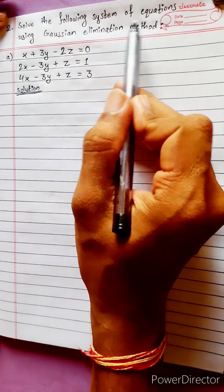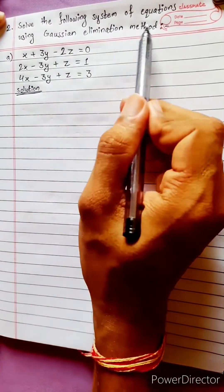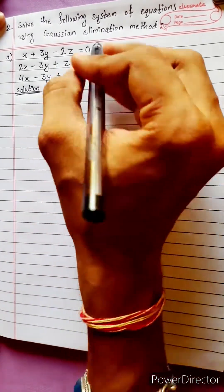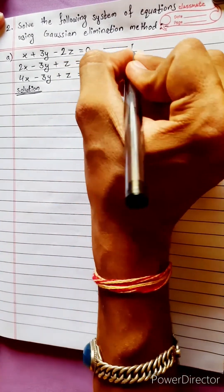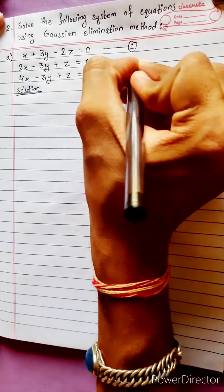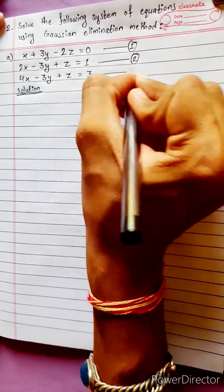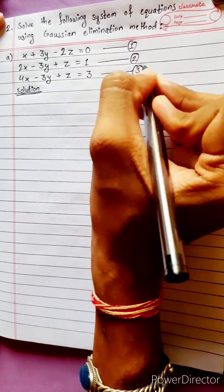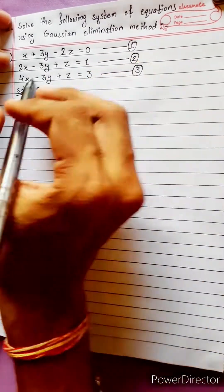Solve the following system of equations using the Gaussian Elimination method. This is the third equation. All coefficients are the same equation.